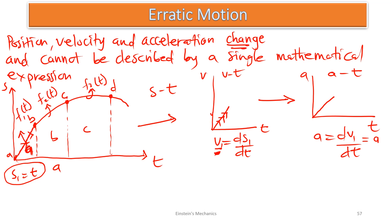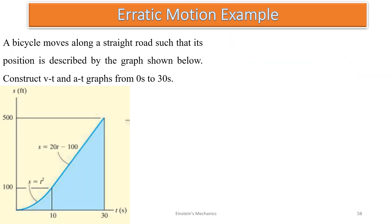Let's look at an example. A bicycle moves along a street such that its position is described by the graph shown. Construct the V-T and A-T graphs from time 0 to 30 seconds. The graph shows the motion from 0 to 30 seconds — from 0 to 10 there is one expression, and from 10 to 30 there is a different expression. This is erratic motion.